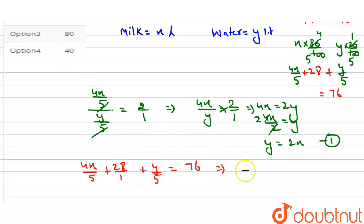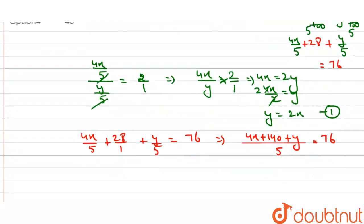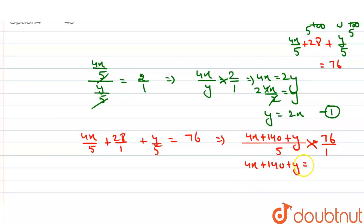LCM لے لیتے ہیں، LCM 5 آئے گا. تو 4x plus 28 into 5 plus y is equal to 76 into 5. 28 into 5 کریں گے تو 140 آئے گا. Cross multiply کر دیں گے: 4x plus y is equal to 76 into 5، جو کہ 380 ہوتا ہے۔